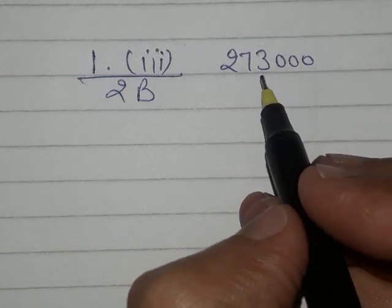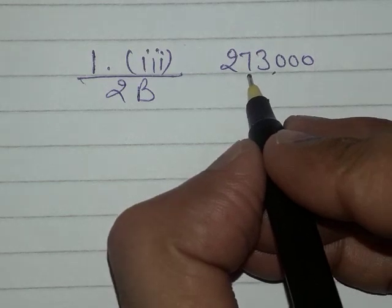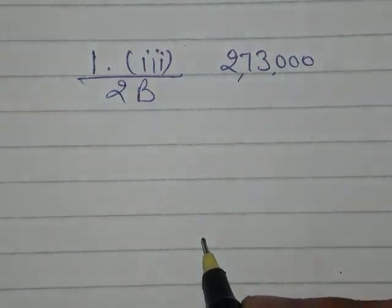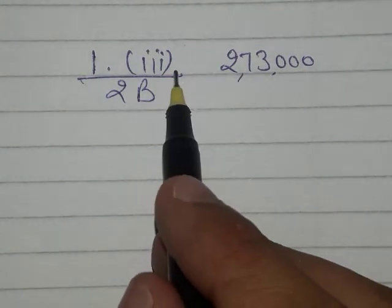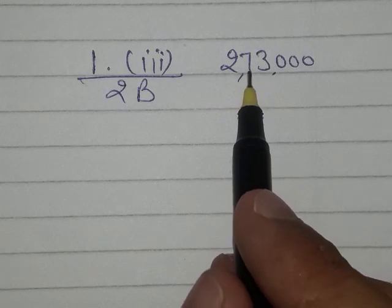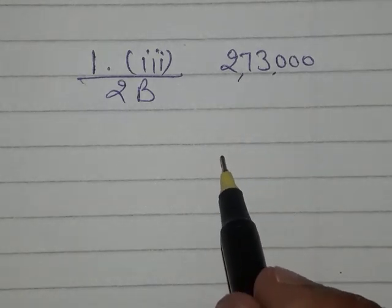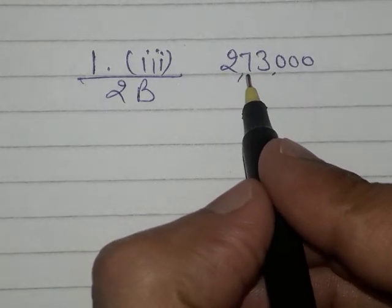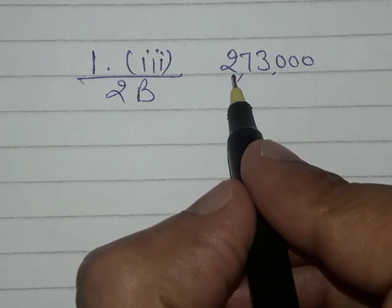Now we will convert the given number 273,000 in its standard form. To convert this number in its standard form, we have to satisfy the value of m, and to satisfy the value of m it should become 2.73.